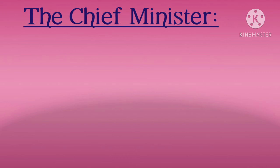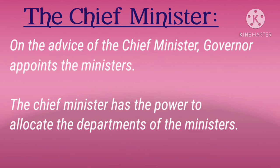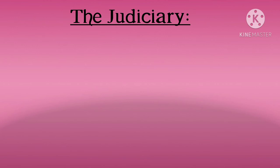Next is the Chief Minister. He is the head of the State Government. The Governor appoints the leader of the party or group that gains majority in the election for Legislative Assembly as the Chief Minister. On the advice of the Chief Minister, the Governor appoints the Ministers. The Chief Minister has the power to allocate the departments of the Ministers and plays an important role in maintaining good relationship with the Centre and the States.